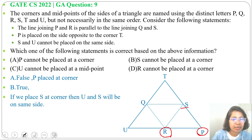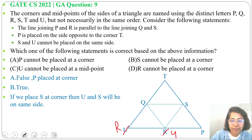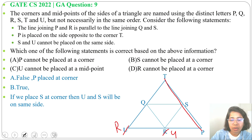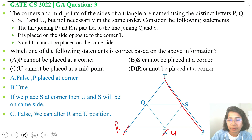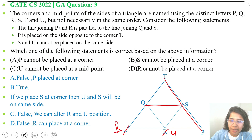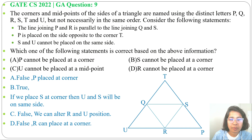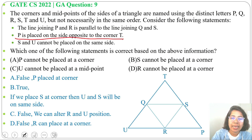Option C: U cannot be placed at a midpoint. This is false. We can place U at R's position and R at U's position — P and R will still be parallel to Q and S, and U is not on the same side as S, so U can be placed at a midpoint. Option C is false. Option D: R cannot be placed at a corner. This is also false — R can be placed at a corner and Q and S will still be parallel to P and R. So the answer is option B: S cannot be placed at a corner, because P is placed at a corner and S must be a midpoint.